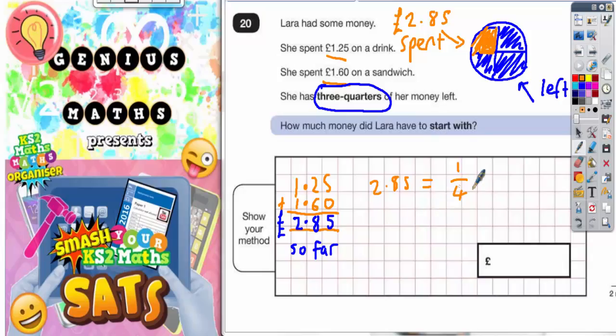All we've got to do is times this by four to get the total amount of money that she started with. So the £2.85 that she's spent so far is one quarter. If we times it by four, we will get the total amount of money that she started with.